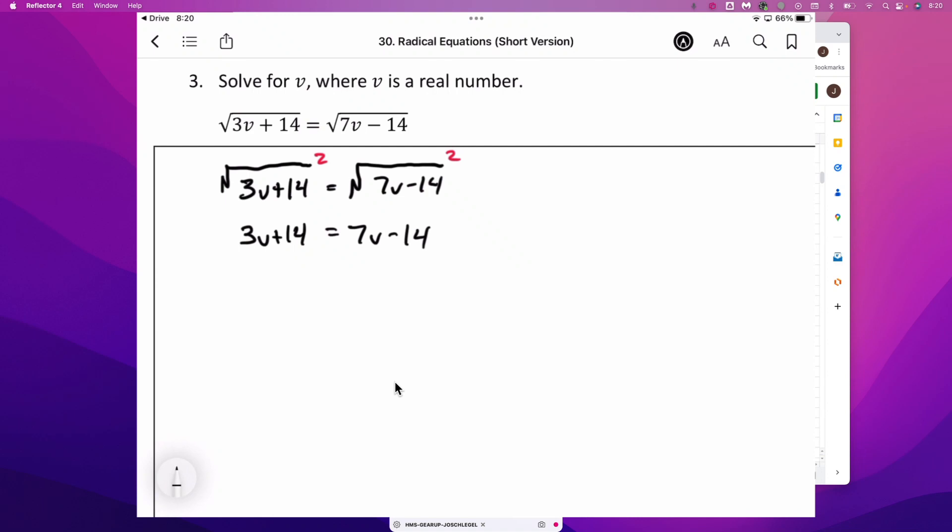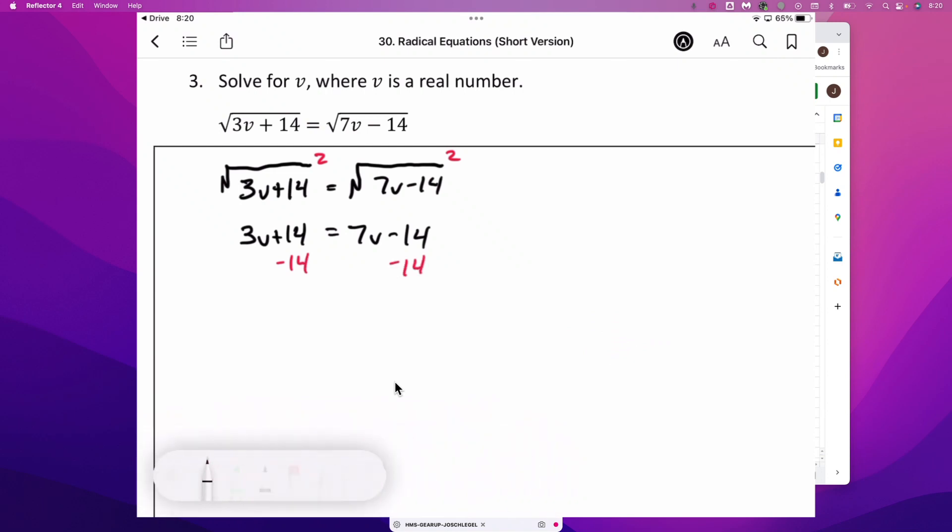And then we have a pretty basic equation to solve here. Same process we always go through with equations. We're going to subtract 14. We'll have 3v is equal to 7v minus 28.